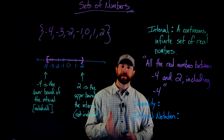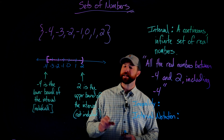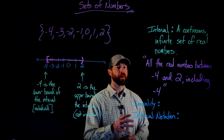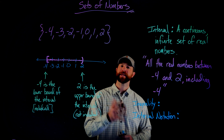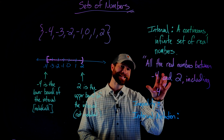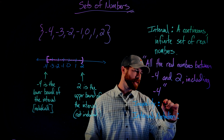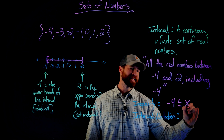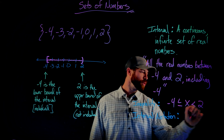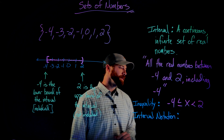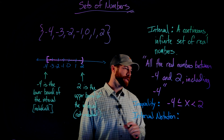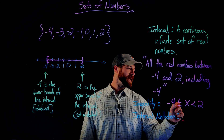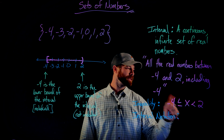Besides the number line, the two ways we describe this set are as an inequality or in interval notation. Most people feel comfortable with inequalities because of the greater than or less than signs. If I want to represent this set as an inequality, it would be a compound inequality: negative 4 is less than or equal to x — using x as a representative number — less than 2. I don't put an equal sign on the right because 2 is not included. X must be greater than or equal to negative 4 and strictly less than 2.